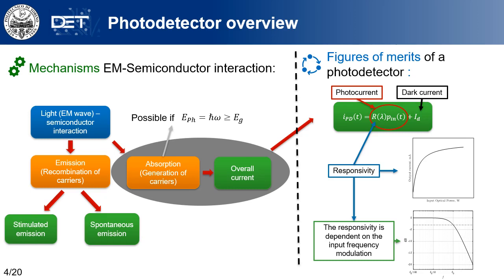A photodiode can be described with a relation made up of a dark current component — the current in the absence of light — and a photocurrent — the current in the presence of light. In this last term, the responsivity is a quantity that relates the input optical power and the overall current. The quantity is power-dependent and may saturate for very high input optical power values, as well as being input signal modulation frequency dependent. At high modulation frequency, the device is not able to follow instantaneously the input optical signal, leading to a low-pass behavior.